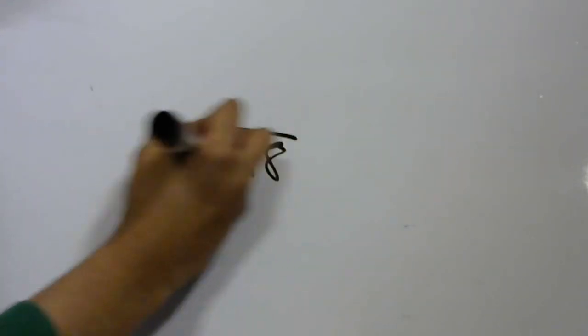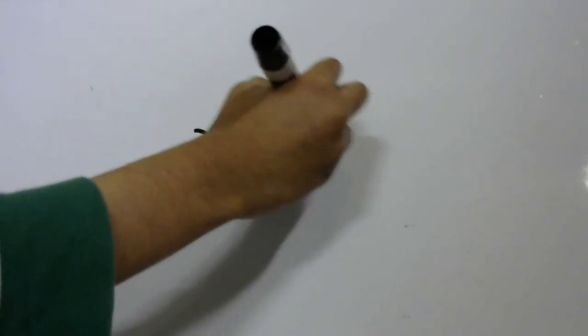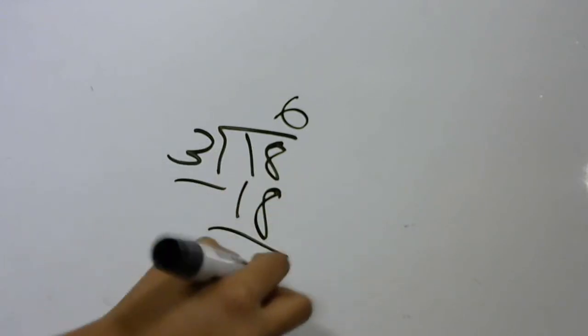So since it's 18 by 3, we do 18 divided by 3. And since 3 times 6 is 18, the answer is 6.